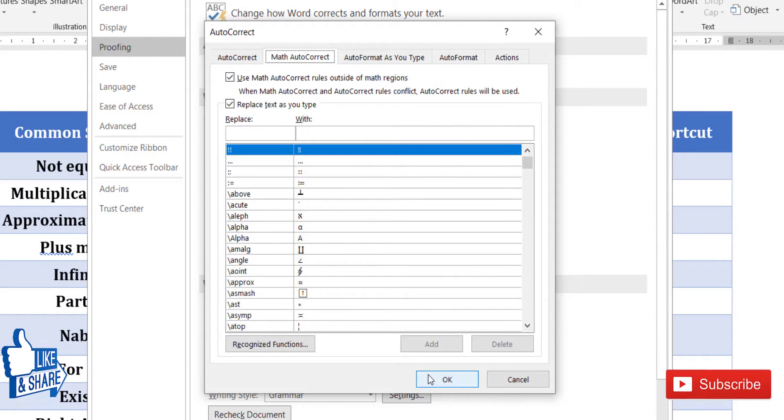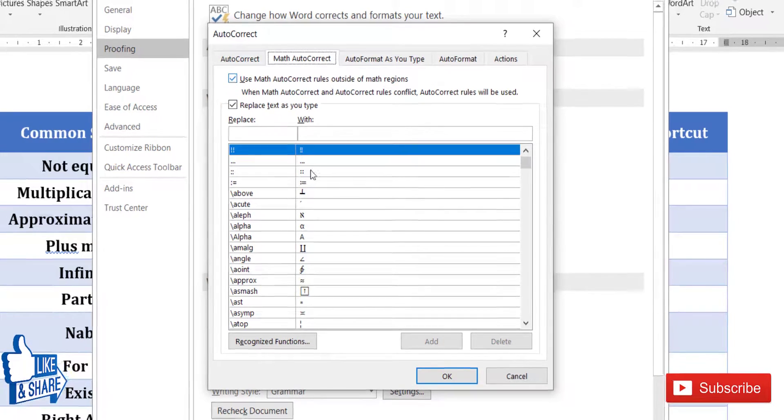If you don't check this, then all the shortcuts will work only in the equation editor. But if you check this box, then the shortcuts can work outside the equation editor too. Just make sure that this is checked if you want to use the shortcut outside the equation editor.